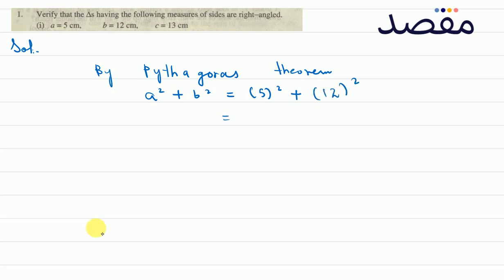Okay, 25 plus 144, 12 square. We have 169.